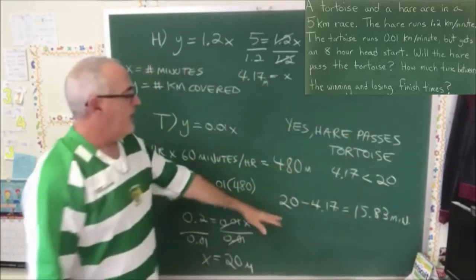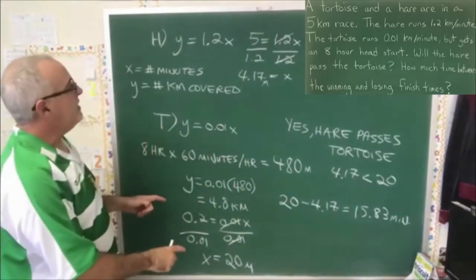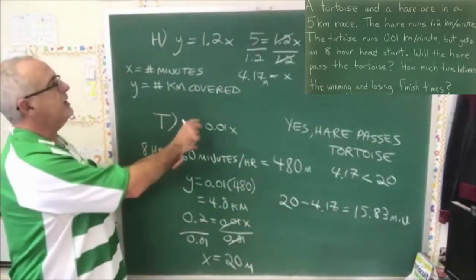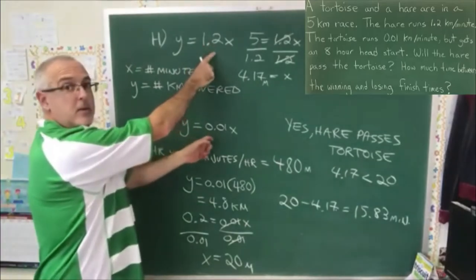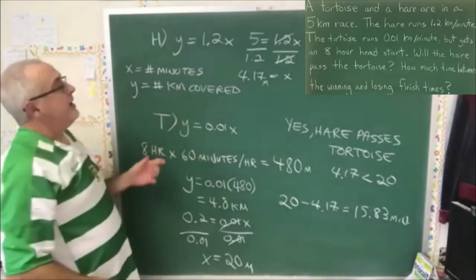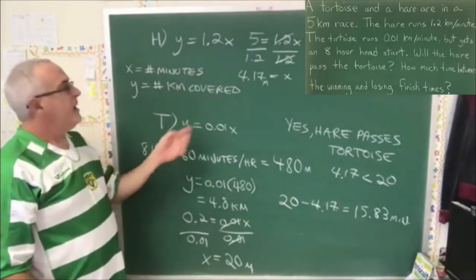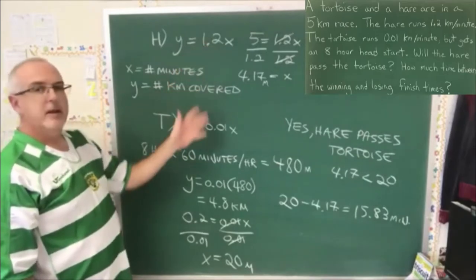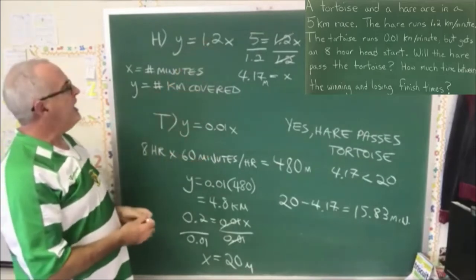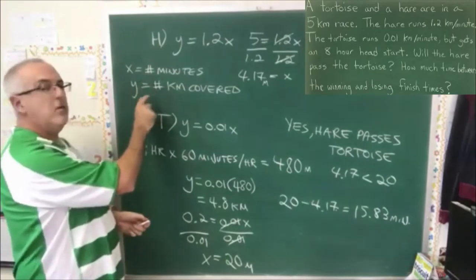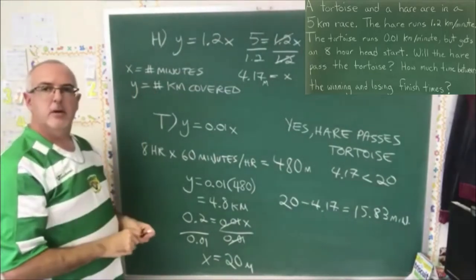So now I've answered part two of the question. I did all of that using equations where I have a positive slope. This question can also be done using equations with a negative slope, and the way to do that is to change the way we define our variables. So that's what I'm going to do next.